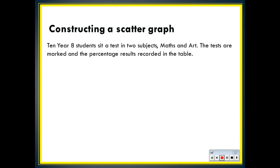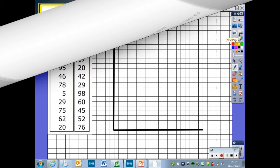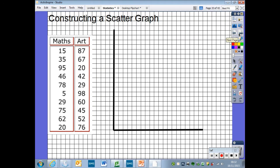Ten year eight students sit a test in two subjects, maths and art. The tests are marked and the presented results are recorded in the table. Does there appear to be any link between the art and math scores for each student? It isn't very easy to tell. We shall draw a scatter diagram to see if there is a link. We construct a scatter graph by plotting the coordinates onto our graph. Each pair of scores is a coordinate.